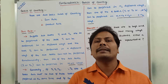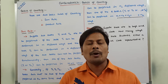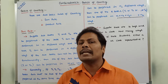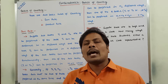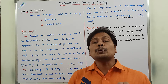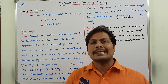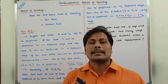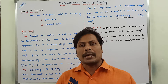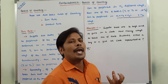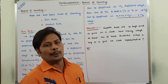So now in this video, we have to discuss about basics of counting in combinatorics. There are mainly two types of basics of counting. The first one is the sum rule and the second one is the product rule. So first we have to concentrate on the sum rule.